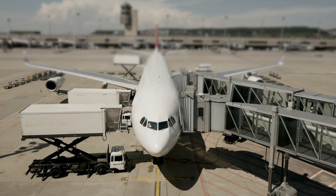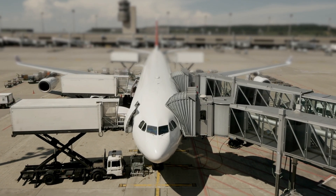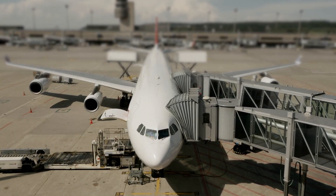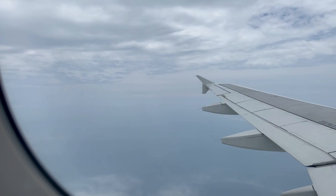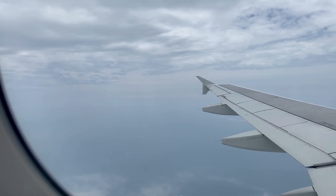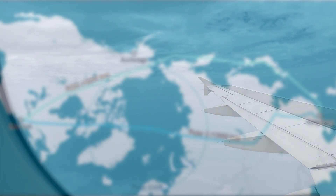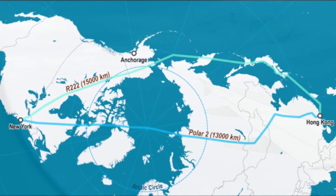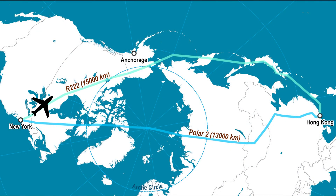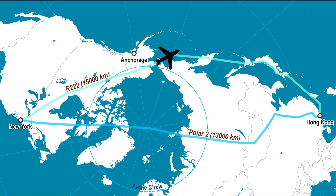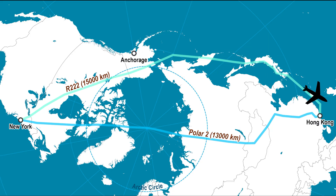Airlines compete on punctuality, reliability, and cost, so every nautical mile saved matters. There's also a practical consideration when flying over polar regions. Some great circle routes pass close to or over the poles — these are called polar routes, and they're used for flights like New York to Hong Kong or Chicago to Beijing. These routes weren't always possible due to magnetic compass errors and limited communications, but with modern satellite navigation and long-range communication systems, polar routes are now both common and highly efficient.